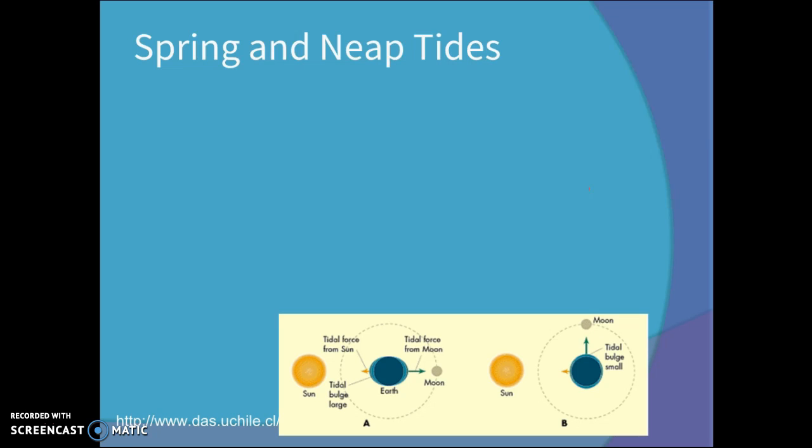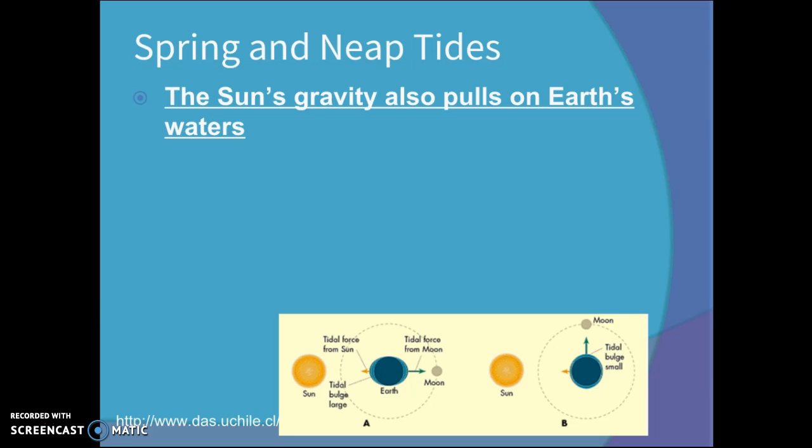We're going to talk a little bit about something called a spring tide and a neap tide. It's not just the Moon that's involved in tides. The Sun also plays a little bit of a role. So the Sun's gravity also pulls on Earth's waters. The Sun's further away, so it doesn't have as much of an impact as the Moon, but it does have some.